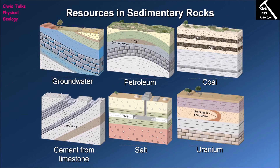The uranium comes out of solution and forms minerals, typically a range of uranium minerals of which the most common is uraninite. Geologists can then look for these roll fronts — they're quite visible in certain sandstone layers in areas like Saskatchewan, Canada. The uranium can be extracted by mining the rock and processing it, or by pumping acid down to dissolve the uraninite and pumping it back out as a liquid. These sediment-hosted uranium deposits are arguably the easiest uranium resources to access.